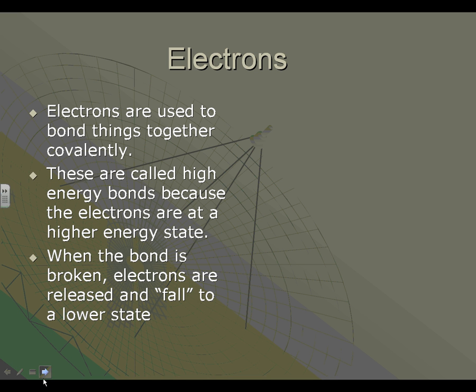When the bond is broken, electrons are released and fall to a lower state. So let's take a thing like methane. Methane is CH4. There are electrons here holding - I'm going to just draw them as two dots - shared chemical bonds. If we break this chemical bond, those electrons are released, and what happens then is that those electrons fall to a lower state. We say they fall to lower energy. That's an important idea.